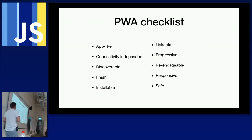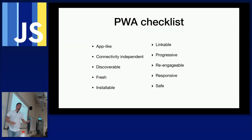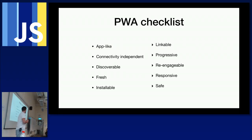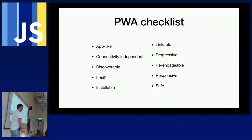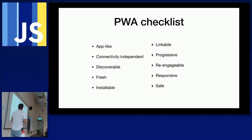Google was the first company to come up with a PWA checklist — the more of these you check, the more likely your application could be considered a progressive web app. The first is app-like: it acts and feels like a native mobile app. Connectivity independent: works offline. Discoverable means you can install and find the PWA.